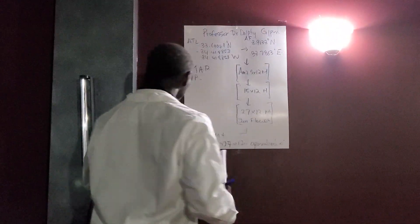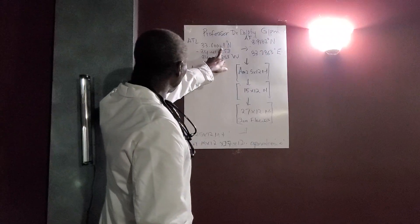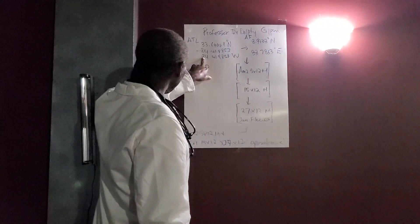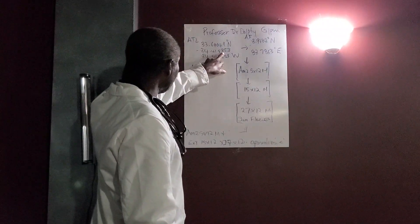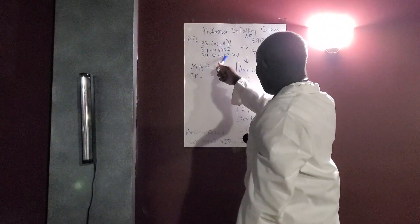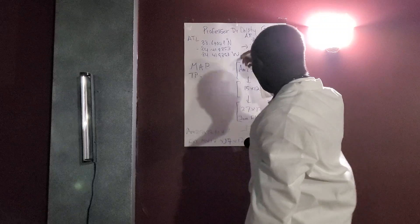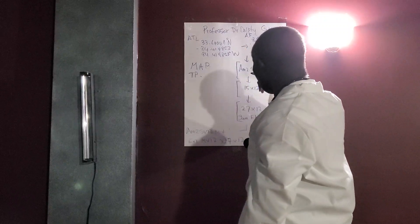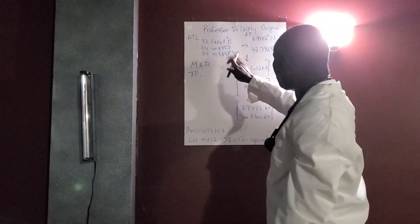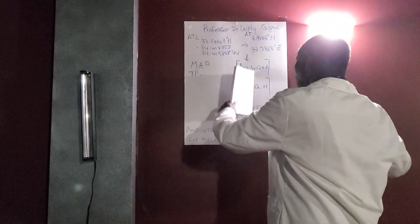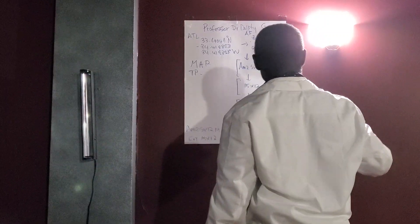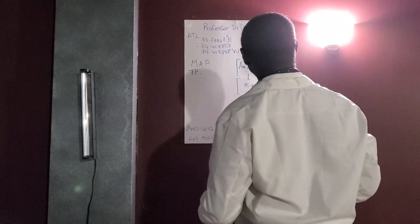And once again, we start off here at 33.644 degrees north latitude and minus 84.419853 degrees, which is written as 84.419853 degrees west longitude. So the minus just represents west, like on the Cartesian coordinate, on the left-hand side is minus, and on the right-hand side which is east is positive.